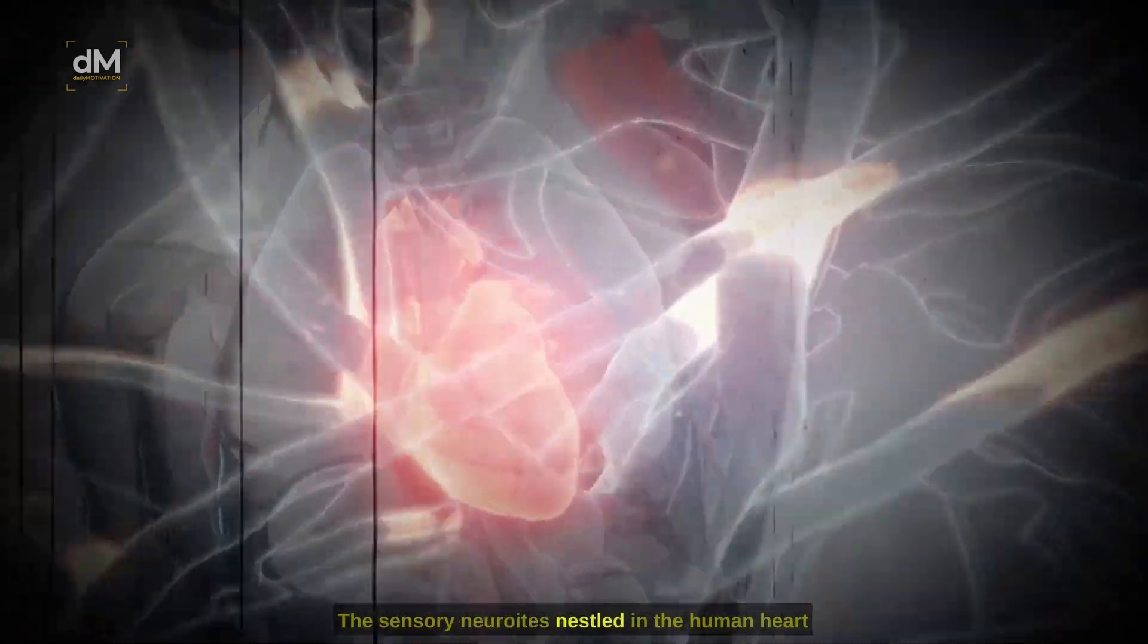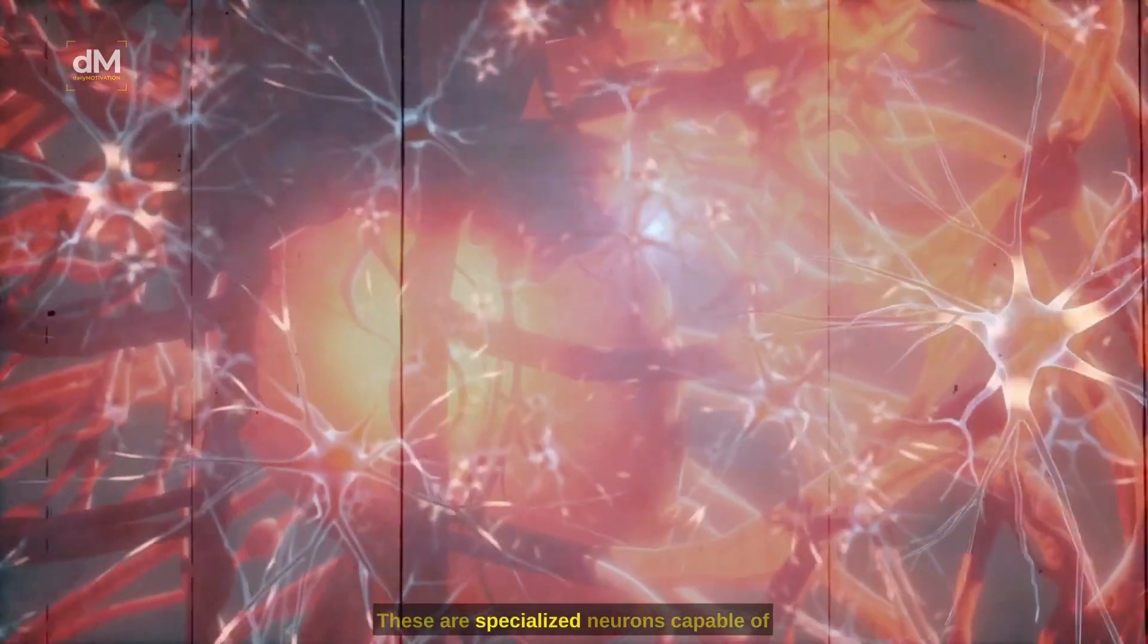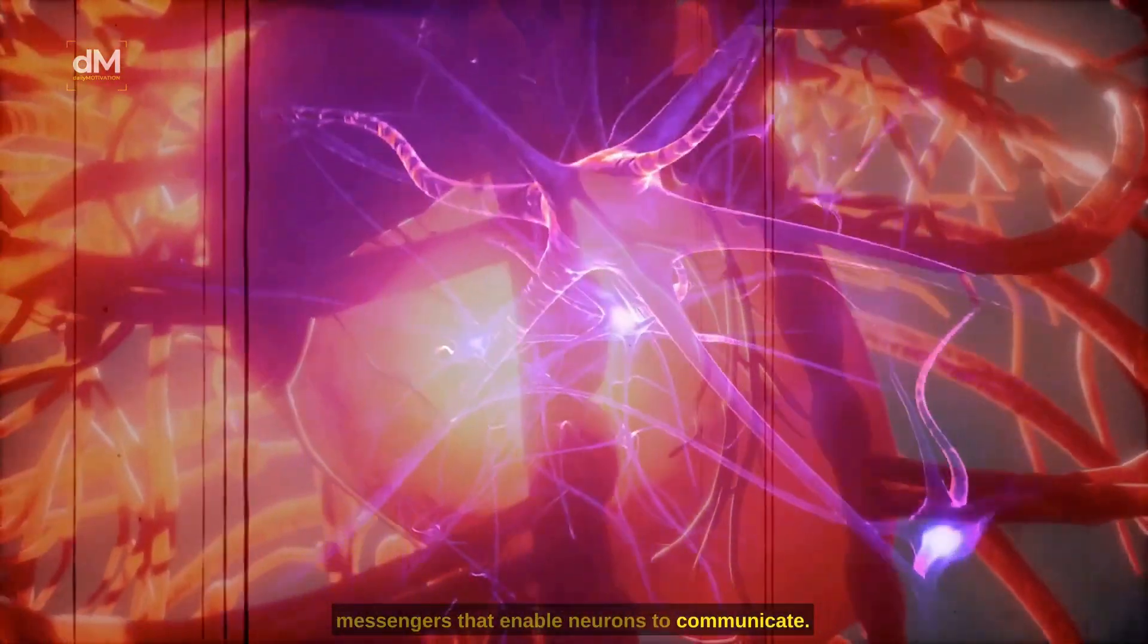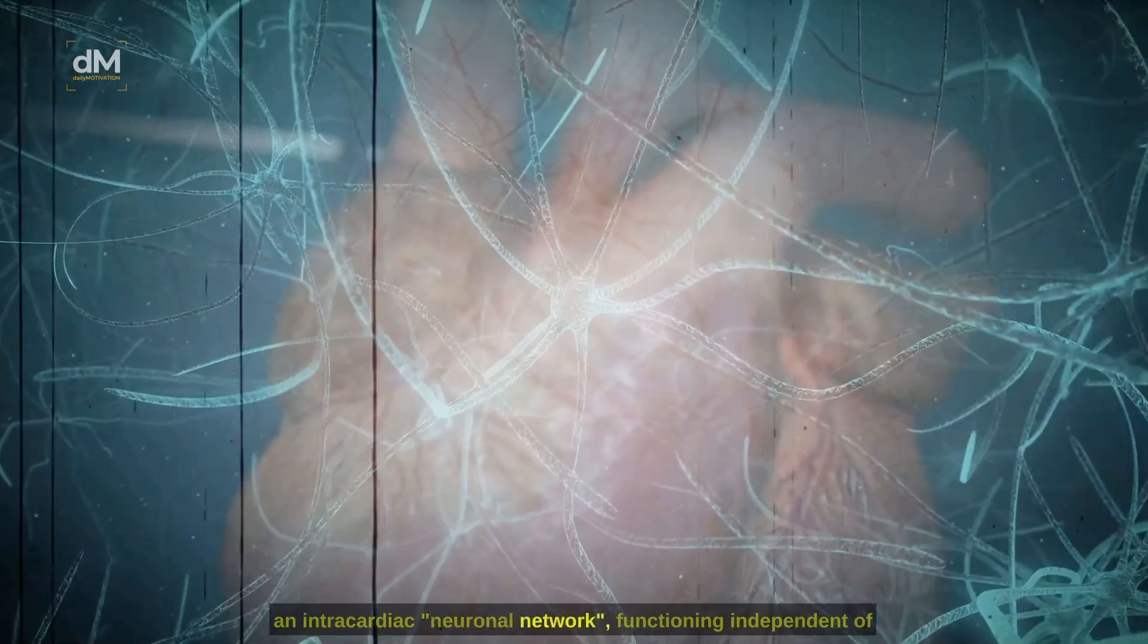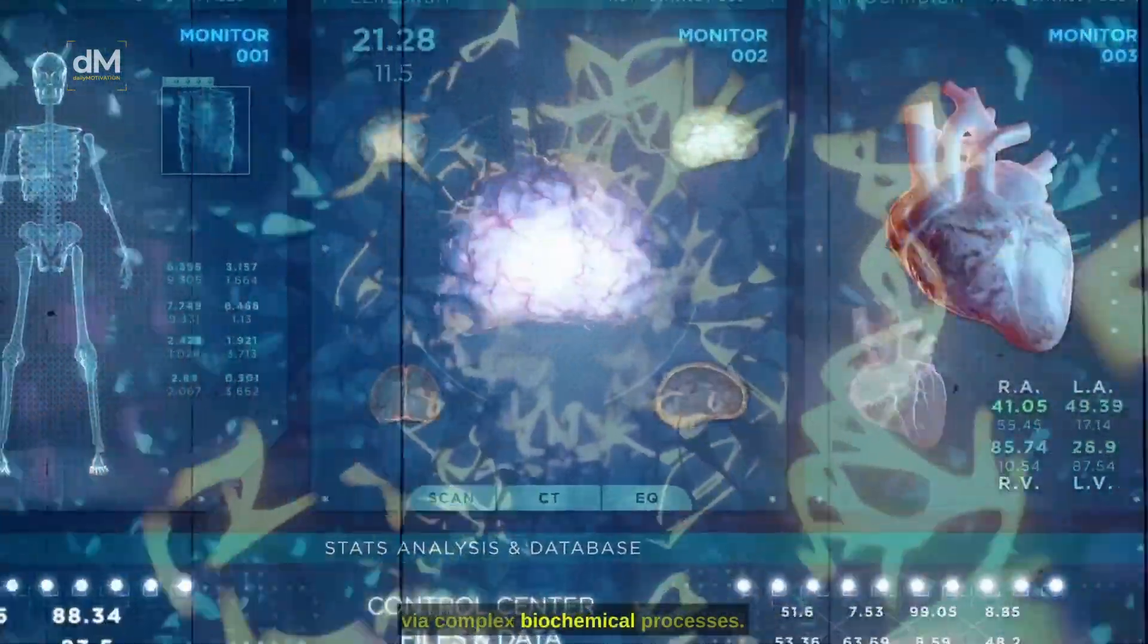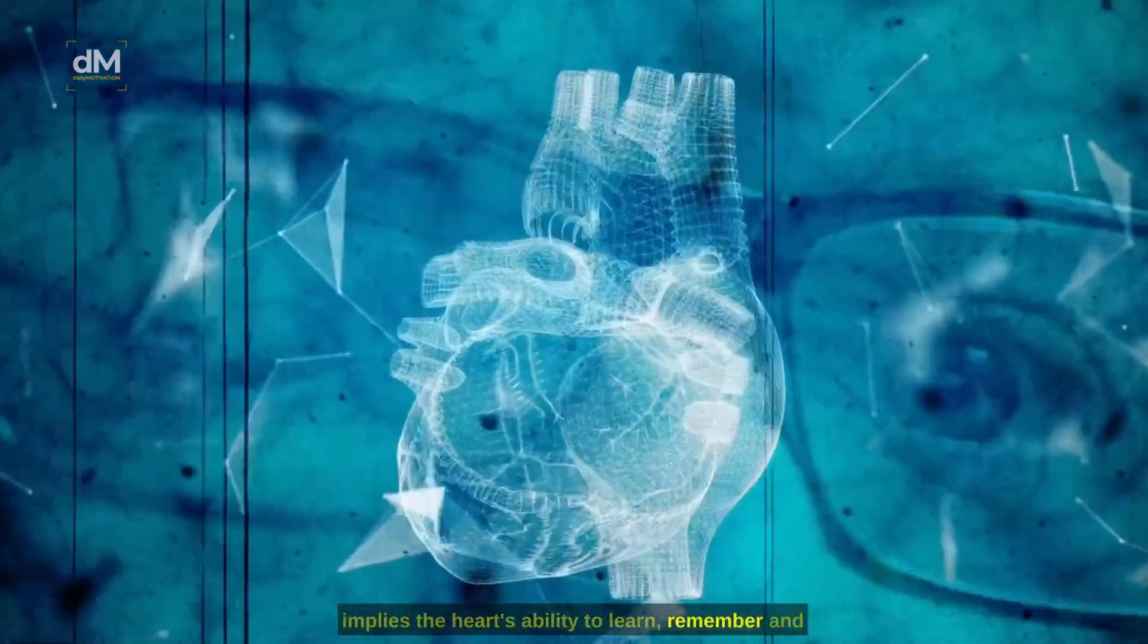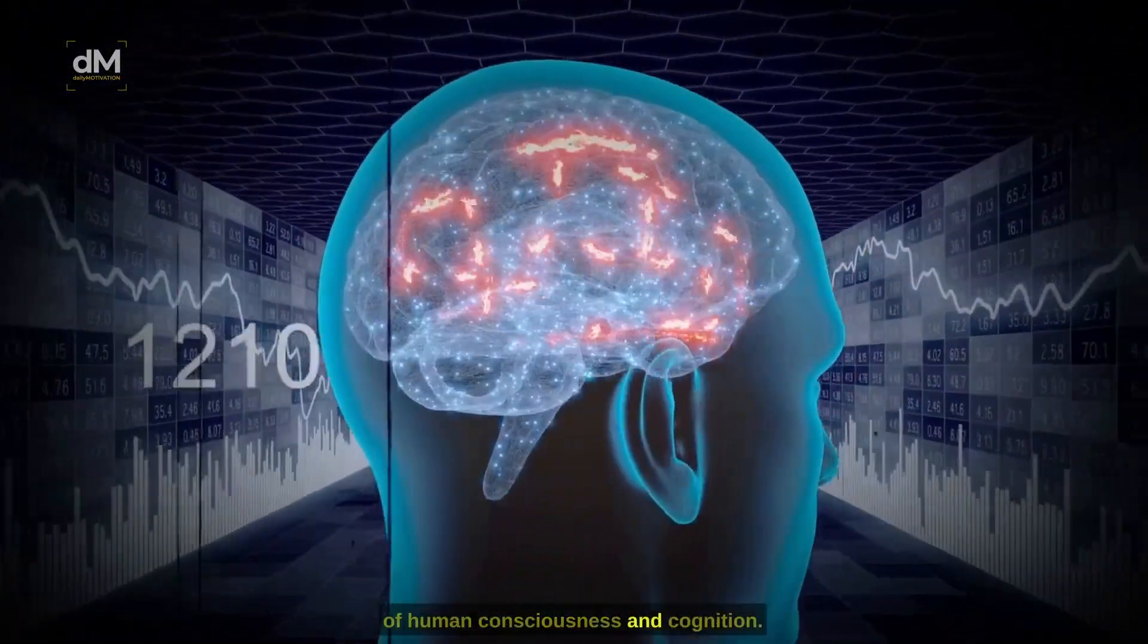The sensory neuroites nestled in the human heart are not merely bystanders in the organ's operations. These are specialized neurons capable of producing and releasing neurotransmitters, the chemical messengers that enable neurons to communicate. This property inherently suggests the existence of an intracardiac neuronal network, functioning independent of the brain, yet intricately connected to it via complex biochemical processes. Most intriguingly, the presence of these cells also implies the heart's ability to learn, remember, and make decisions—a paradigm shift in our understanding of human consciousness and cognition.